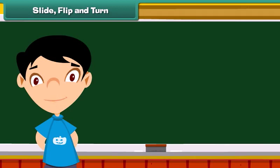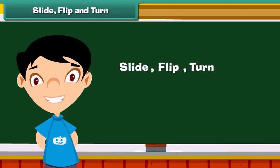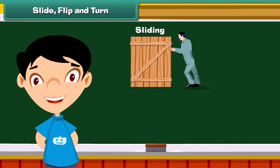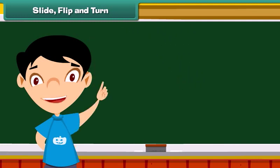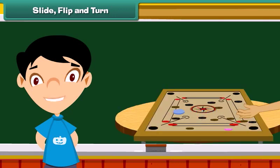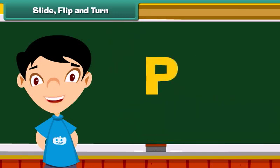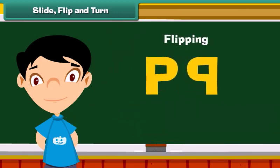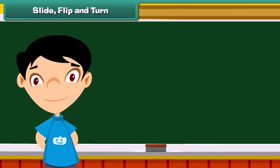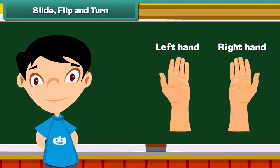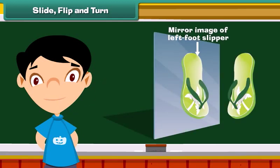Moving an object smoothly along a surface without disturbing its shape and size is called sliding. We observe sliding in real life while playing carrom — we move the carrom coins by hitting them with the striker. Children also enjoy themselves on slides. Creating a mirror image of an object is called flipping. A right hand is a mirror image of our left hand, so if we flip our left hand we get our right hand. Similarly, the right foot slipper is a mirror image of the left foot slipper. Flipping or sliding does not alter the shape of the object.